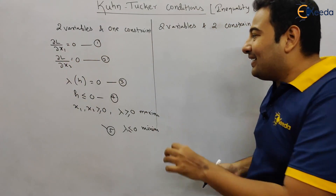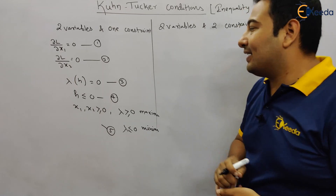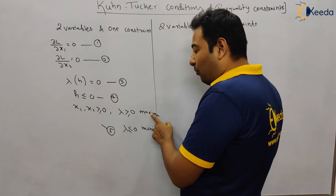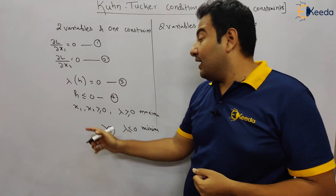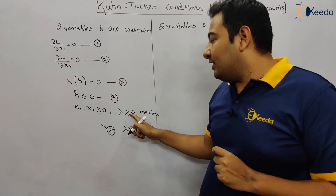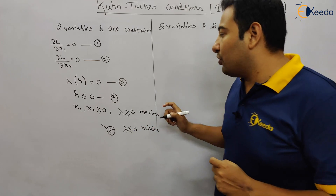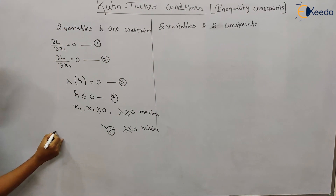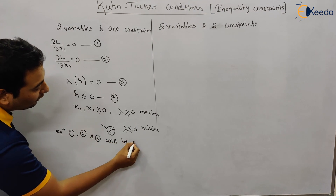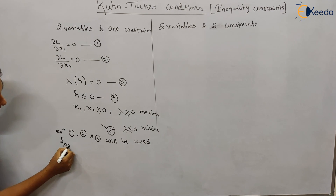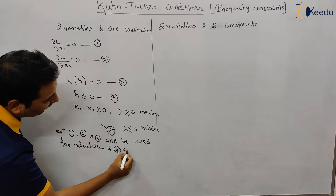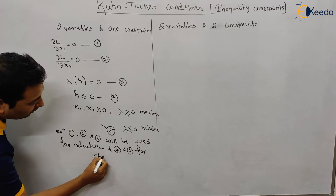These five conditions must be satisfied for two variables and one constraint. Note that x1 and x2 will be greater than or equal to zero in both maxima and minima cases. Conditions one, two, and three are used for calculation, while conditions four and five are used for checking. This is a very important point that we'll see while solving problems.